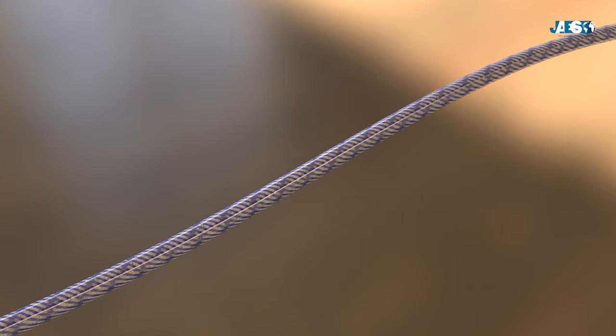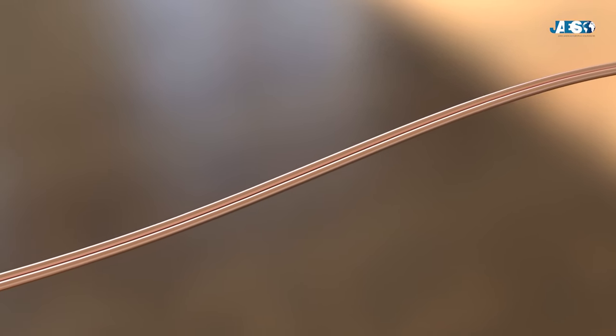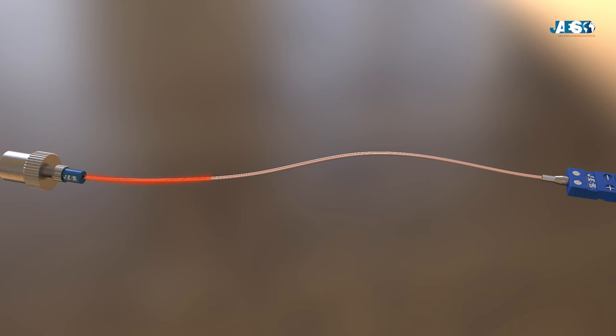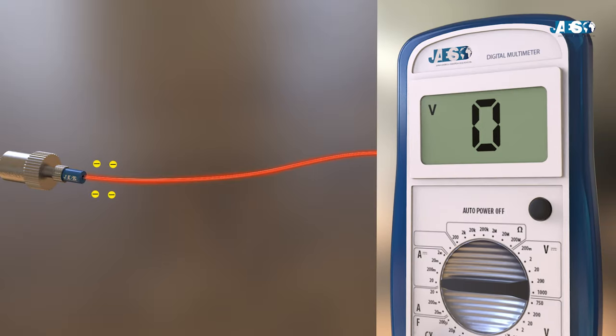If the thermocouple were made up of two equal wires, the heat will be distributed in the same way and we will have the same number of electrons. By measuring the voltage, we will notice that it is equal to zero, because there is no potential difference in a circuit consisting of two equal metal wires.